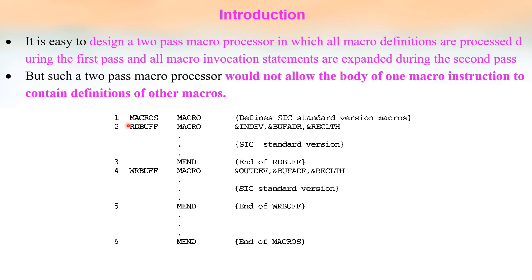Consider this example: macro MACROS. The macro keyword means this is the definition of the macro called MACROS. Inside this definition, two other macros are defined — RDBUFF macro with its parameters ending with MEND, and WRBUFF macro with its parameters also ending with MEND. That MEND is for the outer macro. So two macros are defined inside the macro MACROS.